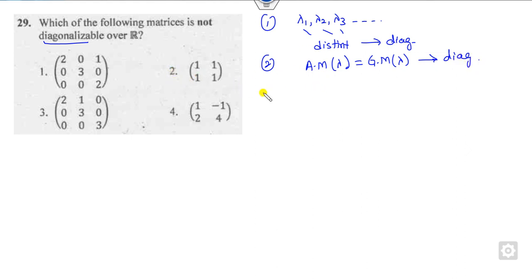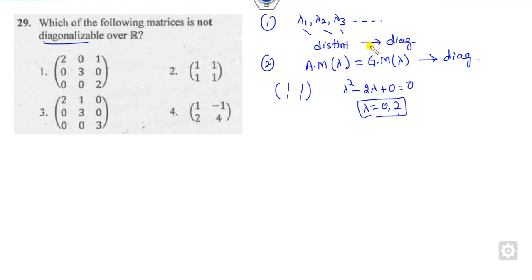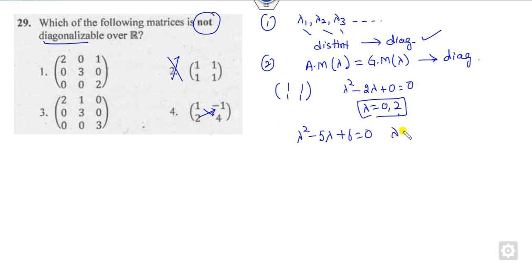Starting with the 2×2 case: the sum of eigenvalues is 2 and the product is 0, so the eigenvalues are 0 and 2, which are distinct — so it is diagonalizable. But we are looking for the one that is NOT diagonalizable, so this option is cancelled. For the next matrix, trace is 5, determinant is 6, eigenvalues are 2 and 3 — distinct — so this is not the false statement either.